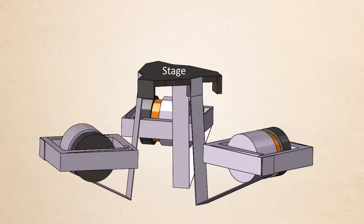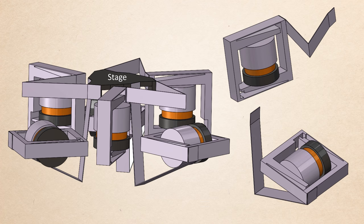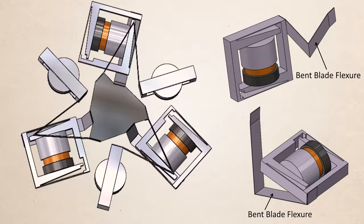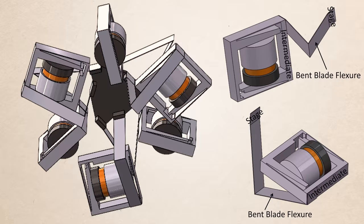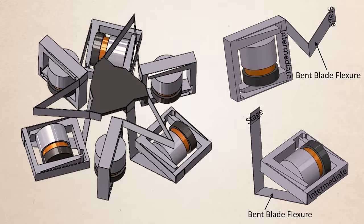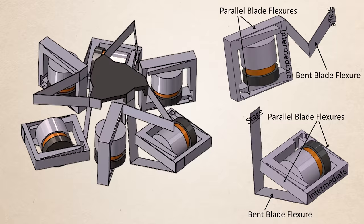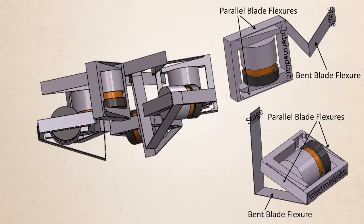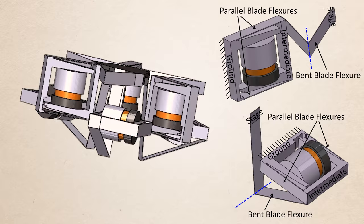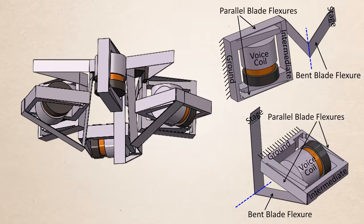The hex blade positioner consists of a rigid stage joined to two different but similar sets of three identical decoupled actuation limbs arranged in an axisymmetric configuration. Each decoupled actuation limb consists of a bent blade flexure that joins the positioner's stage to an intermediate rigid body. This intermediate rigid body is joined to another rigid body by two blade flexures which lie on parallel planes that are perpendicular to the axis of the bent blade flexure's crease shown by the dashed blue lines. The last rigid body in the serial chain of flexures is mechanically grounded as indicated by the hatched black lines.